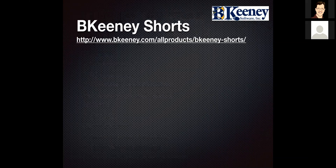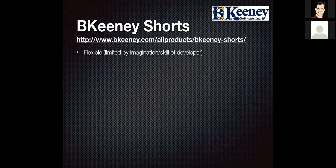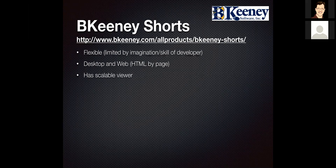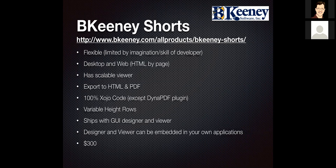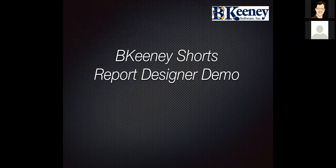Here is the URL for Bikini Shorts. The first thing about Bikini Shorts is it's pretty flexible — on the code side it's really limited by the imagination and skill of the developer. We've got desktop and we can do reports on desktop and web. On the website we're doing HTML by page. We have a scalable viewer, and in addition to our report designer now, we can export HTML and PDF. It's 100% Zojo code except for the DynaPDF plugin. We've got variable height rows and we ship with the GUI designer viewer. The price tag for all this is $300, and you don't have to pay anything else afterwards.